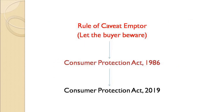Before discussing the act, let us understand why the Consumer Protection Act — either 1986 or 2019 — was required. Earlier, the rule of caveat emptor prevailed, which means 'let the buyer beware.' That means if the buyer purchased something and it turned out to be defective, the buyer would be liable and not the seller.